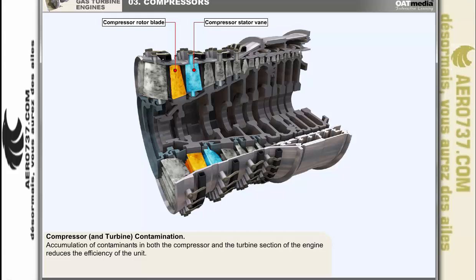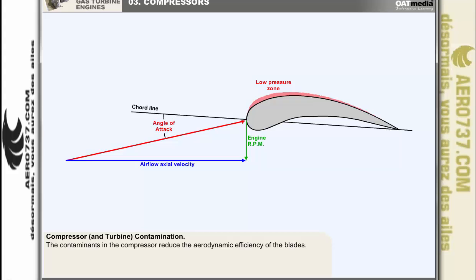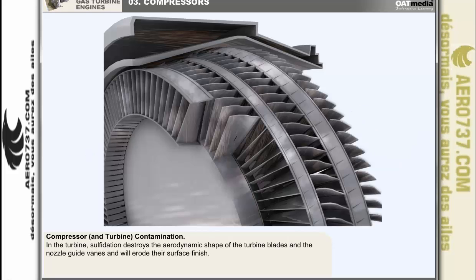Accumulation of contaminants in both the compressor and the turbine section of the engine reduces the efficiency of the unit. Contaminants in the compressor — mostly salt and pollution from industrial areas — reduce the aerodynamic efficiency of the blades, which increases the airflow axial velocity, lowering the angle of attack over the blade. In the turbine, contamination takes the form of sulfidation, which is a build-up of sulfur deposits from the burning fuel, destroying the aerodynamic shape of the turbine blades and nozzle guide vanes and eroding their surface finish over time.